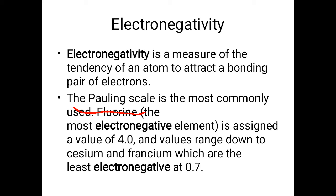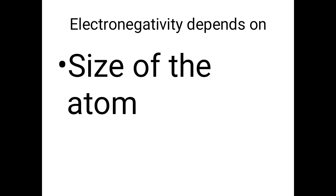Pauling was the name of the scientist who created this scale. On the Pauling scale, the maximum electronegativity value belongs to fluorine at 4.0, and the minimum electronegativity is assigned to cesium and francium. So the most electronegative atom is fluorine and the least electronegative atoms are cesium and francium.